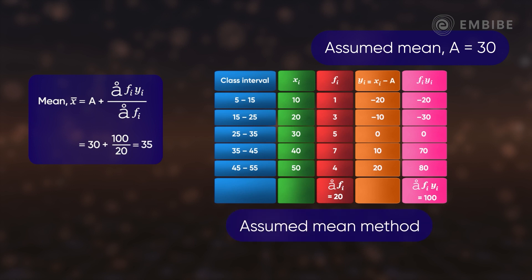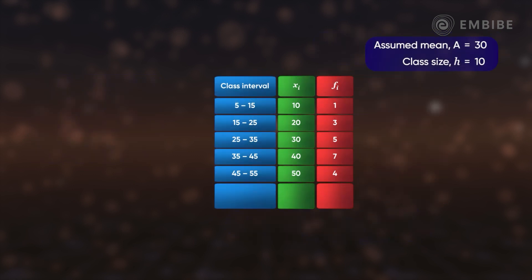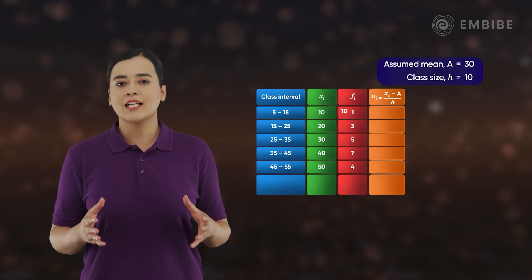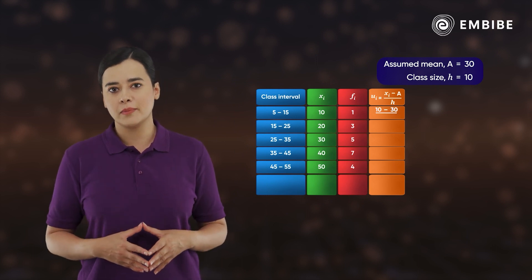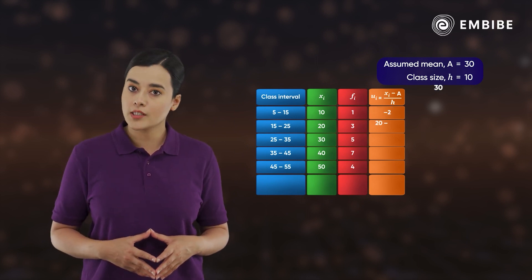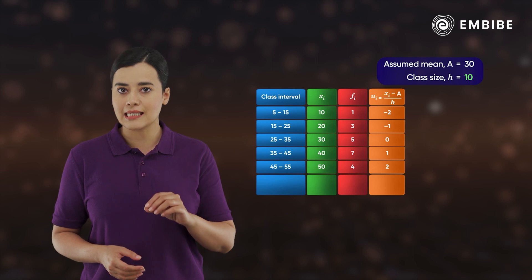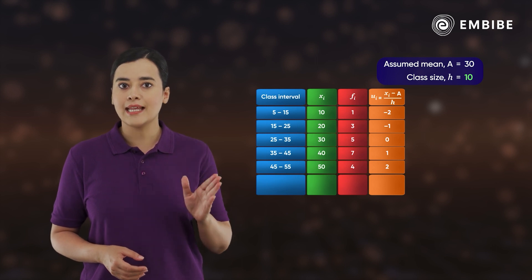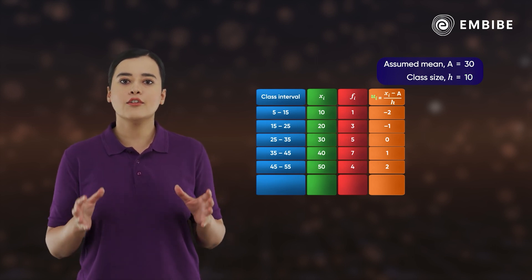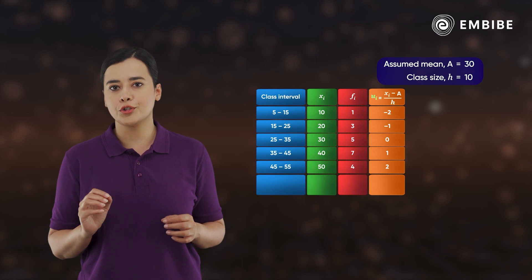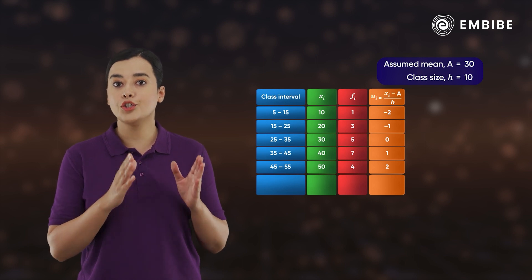This method is called the assumed mean method. If the class intervals are too large, the step deviation method can be helpful. The calculation can be further simplified by dividing the differences by the class size — 10 in this case. Let the new variable after these substitutions be uᵢ's.